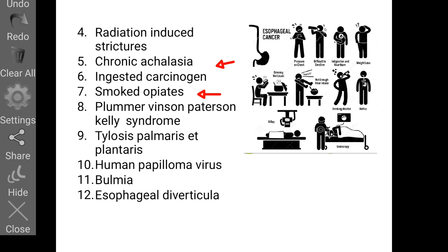Plummer-Vinson (Paterson-Kelly) syndrome is a risk factor comprising a triad of esophageal web, glossitis, and iron deficiency anemia. Tylosis palmaris et plantaris is a congenital hyperkeratotic disease of the palms and soles associated with esophageal cancer.